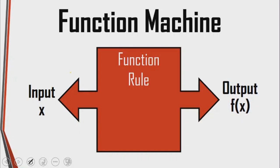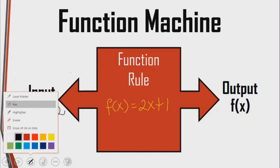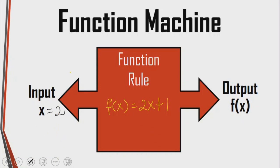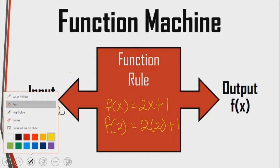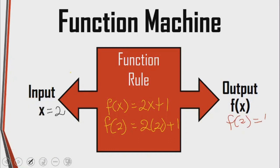Let's assume that we have a function with a rule of 2x plus 1. So when I put in my x to be, let's say x equals 2. Then when I come into the machine, I need to calculate f of 2. So that will be 2 multiplied by 2 plus 1. In this case, the output will be 5 because 2 multiplied by 2 plus 1 gives you 5.